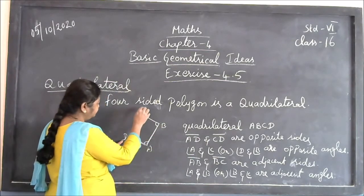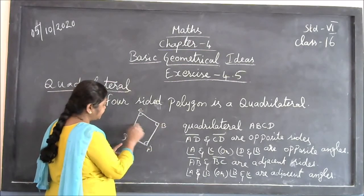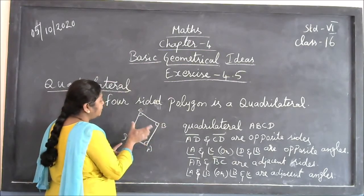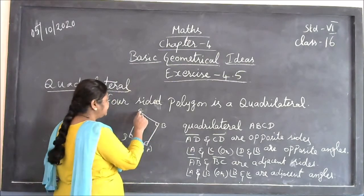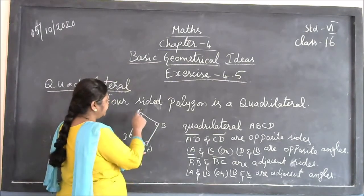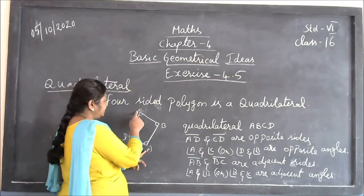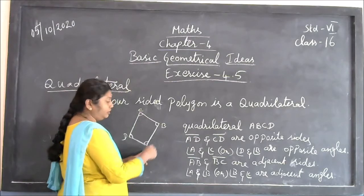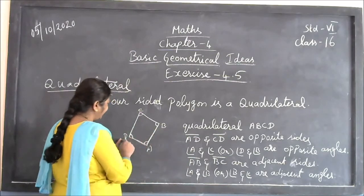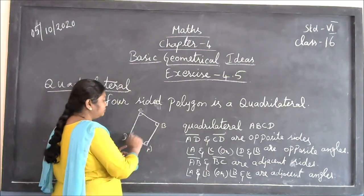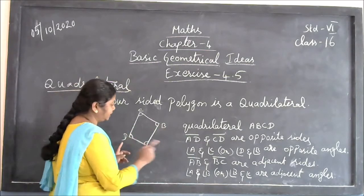Otherwise, you can give the names CD and AB as opposite sides. This side and this side are opposite sides. What are opposite angles? Angle C and angle A are opposite angles. Likewise, angle B and angle D are opposite angles. Both angles are opposite — that is why they are called opposite angles.